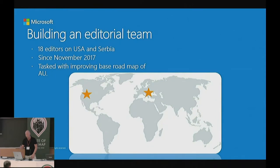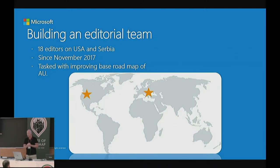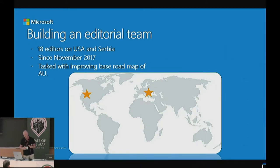We only started this team in November 2017, basically with just an idea of what to do but not much beyond that. Starting off that editorial team, we had just myself. Since November, we've built it up to 18 editors — 12 over in Seattle and the other six over in Belgrade in Serbia. With that, and some of the development team working in Serbia and Seattle, we've been working on the base roadmap of Australia and trying to improve that.